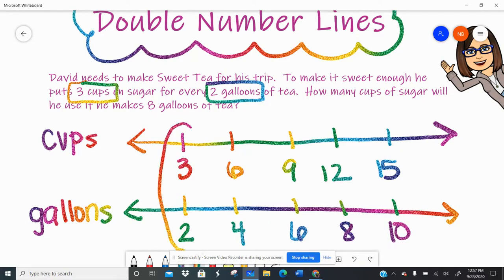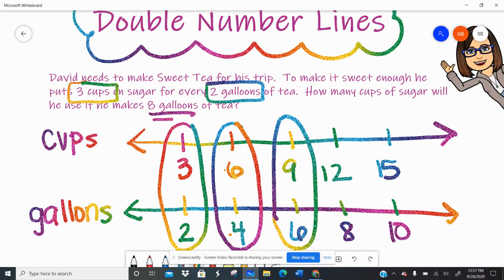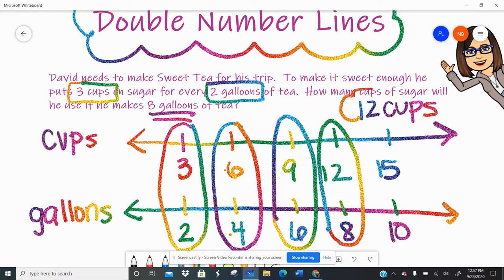The double number lines create all of these equivalent ratios. For every two gallons, there's three cups. For every four gallons, there's six cups. For every six gallons, there's nine cups. And for every eight gallons, and this is the answer to our question, we need 12 cups of sugar. Lots of sugar, but nice and sweet the way us southerners like it. So 12 cups of sugar.